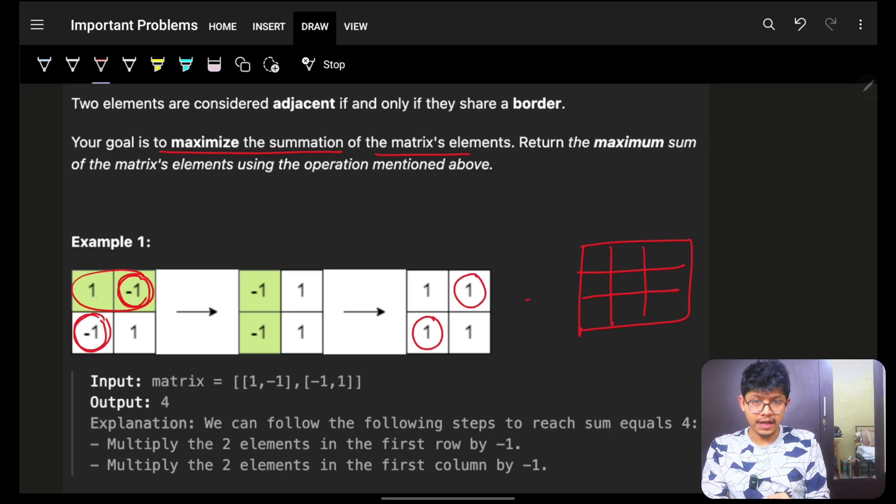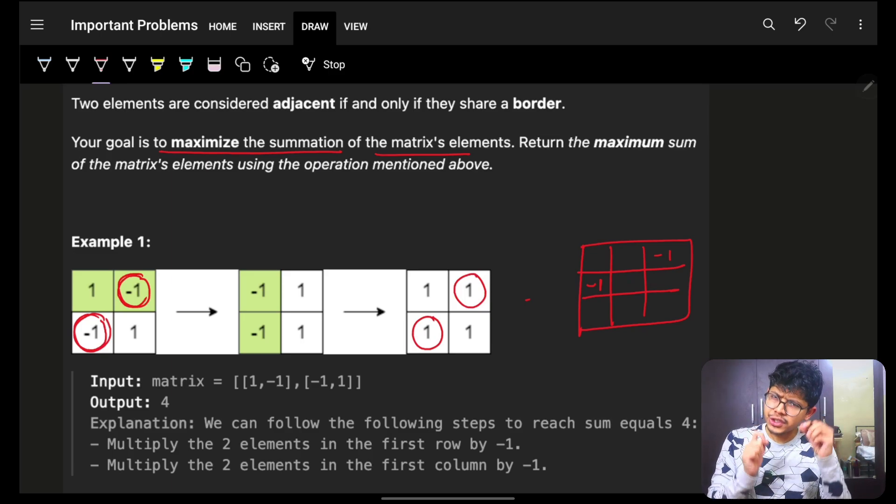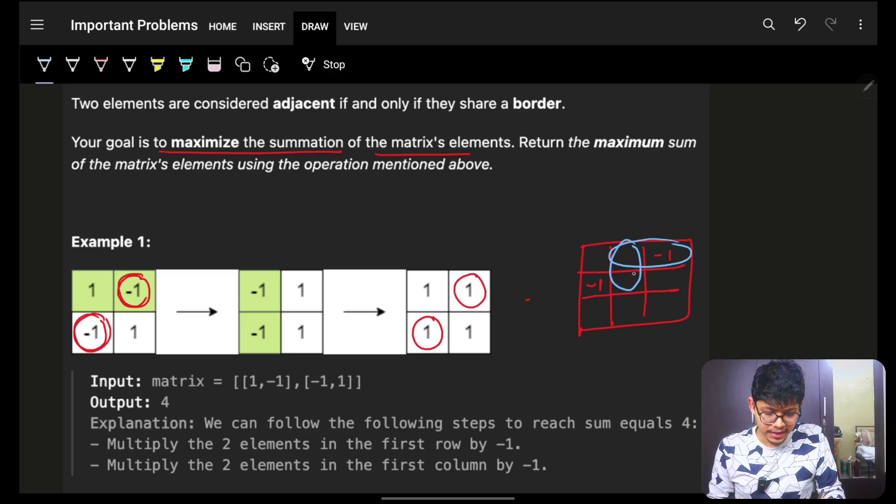Like, these are kind of, I will be able to make it because I have one common element. But what if I ask you, if there would have been a minus 1 here, and let's say randomly a minus 1 here, will you still be able to make it? Obviously, yes. Why? I will firstly make this as a pair, next, this as a pair, next, this as a pair.